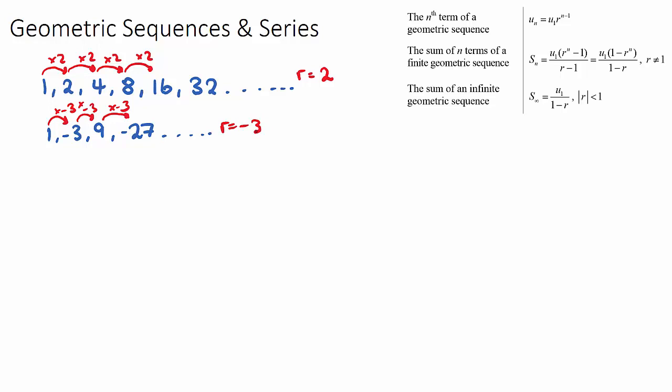Do look out for that. If you have a sequence that goes positive, negative, positive, negative, it will be a negative ratio. Because we know if we multiply a positive number by a negative number, it becomes negative, and if we multiply that by a negative number, it turns back positive. So here is a sequence that has a ratio of negative 3.